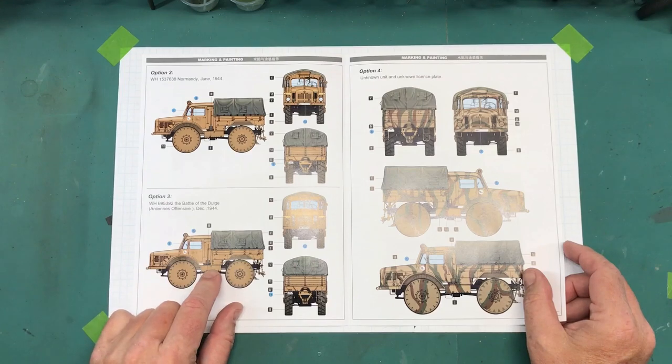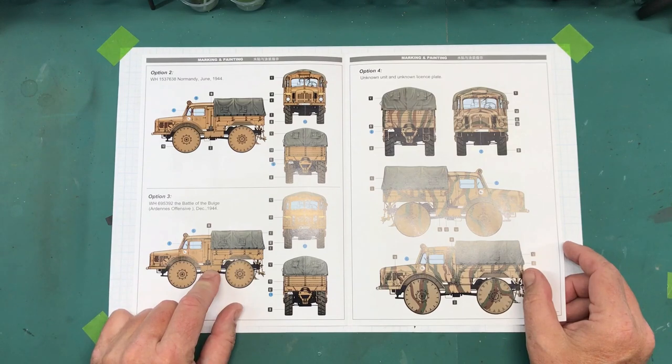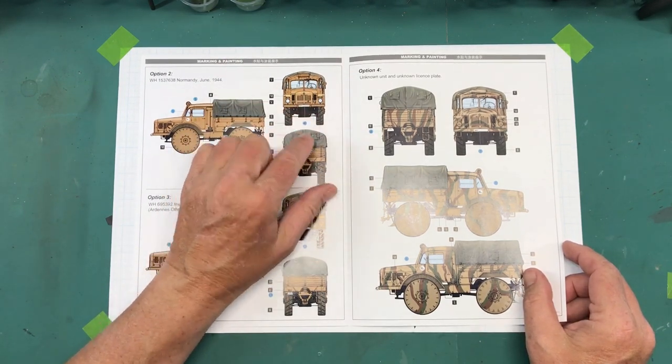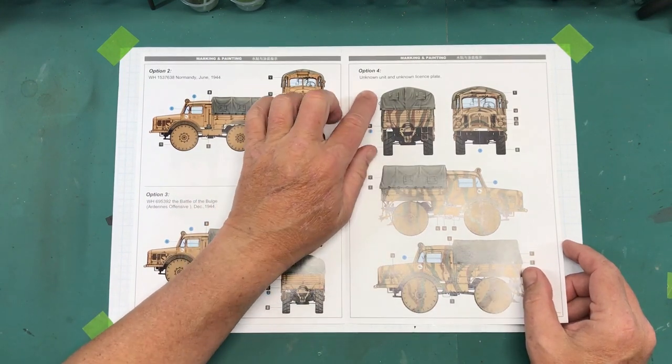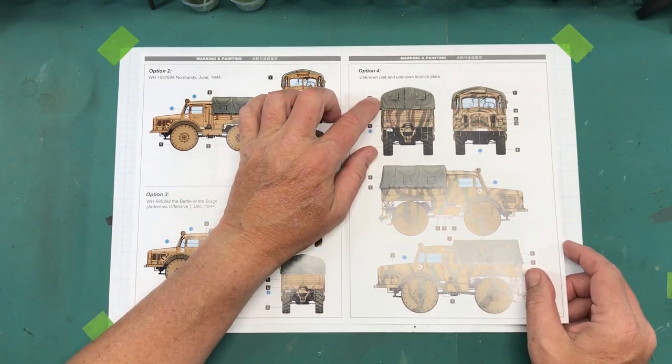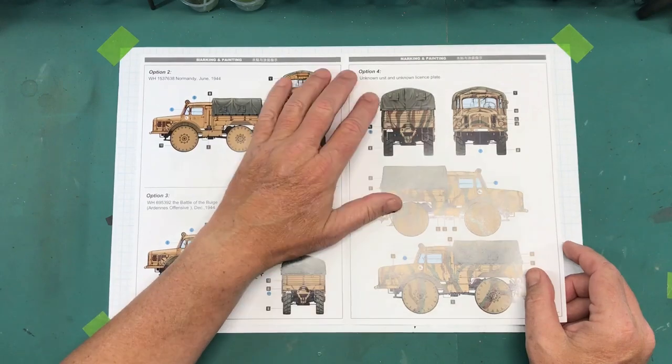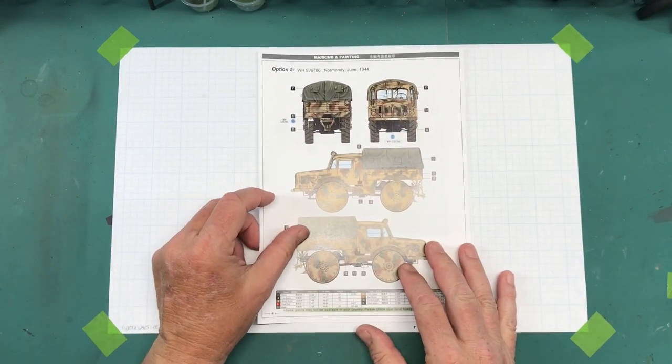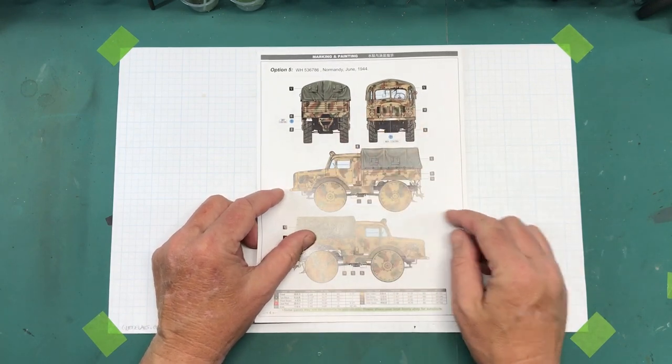Battle of the Bulge, same color. Very similar decal situation. Looks like the only difference is the license plates or whatever you call them. And then you have an unknown unit unknown license plate, and it's a camo scheme. And then you have another Normandy version in camo.